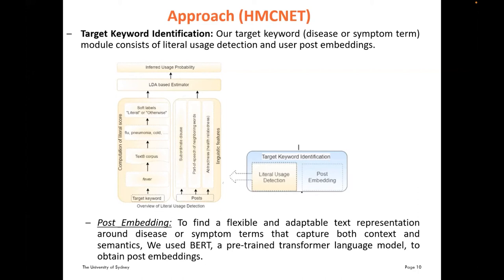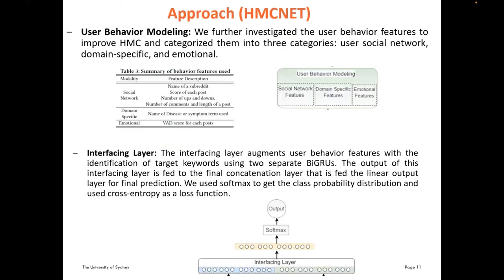For post embedding, we use BERT, a pre-trained transfer language model, to obtain flexible text representations around disease or symptom terms that capture both context and semantics. For user behavior modeling, we investigated user behavior features and categorized them into three groups: social network features (name of subreddit, score of each post, number of ups and downs, number of comments, length of post), domain-specific features (the disease or symptom term used), and emotional features (VAD score or sentiment dictionary for each post). The interfacing layer augments user behavior features with keyword identification using two-layer BiGRUs, and the output is fed to a linear layer with softmax and cross-entropy loss for final prediction.